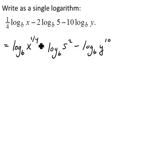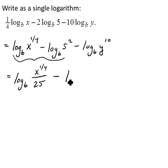And then we see some subtraction, and so that's going to indicate the use of the quotient rule. The quotient rule says that the log of a quotient would turn into the separate logs of their difference when you subtract. So to combine these two into one single logarithm, I would get log base b of x to the one-fourth over five squared. Now I'm going to go ahead and write the five squared as 25. And I still have minus log base b of y to the tenth.